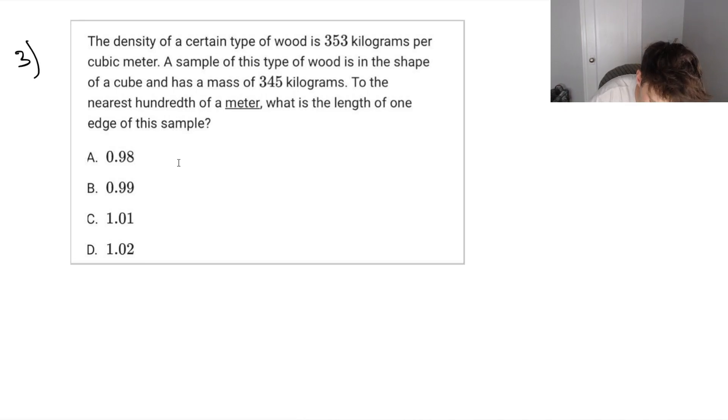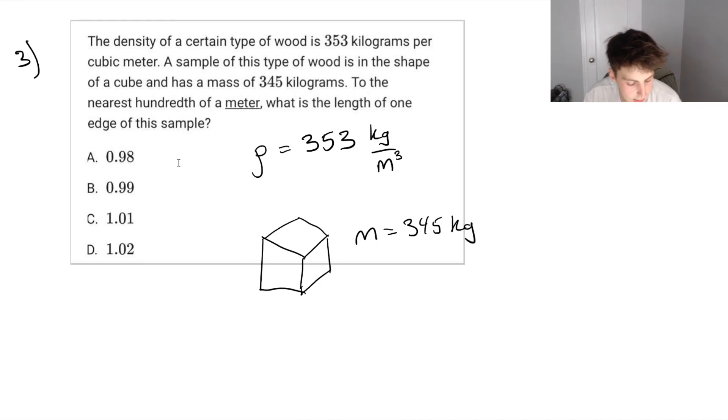We know that the density of wood, we give that the variable rho, is 353, and this is kilograms per meters cubed. It tells us we also have this sample of wood. It's in the shape of a cube. So all of the side lengths are the same. And it has a mass of 345 kilograms. It's asking us, what's the length of one edge of the sample?